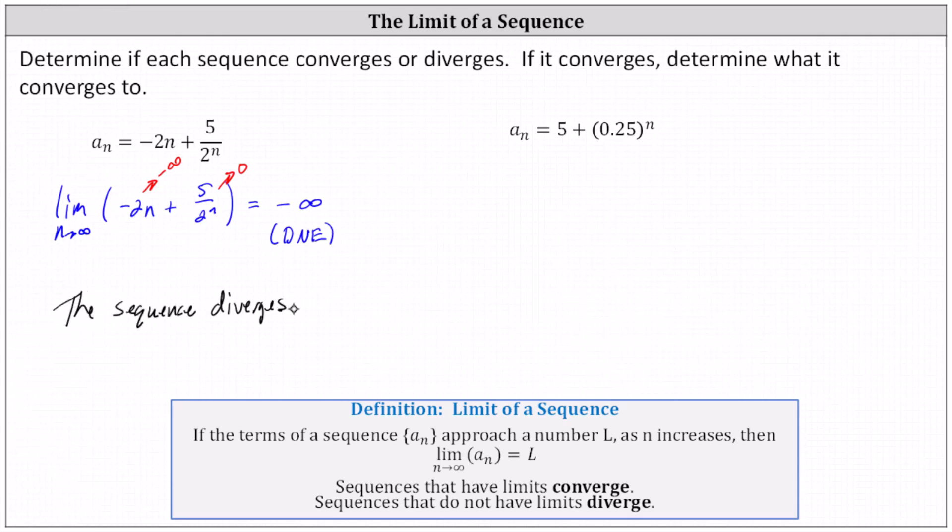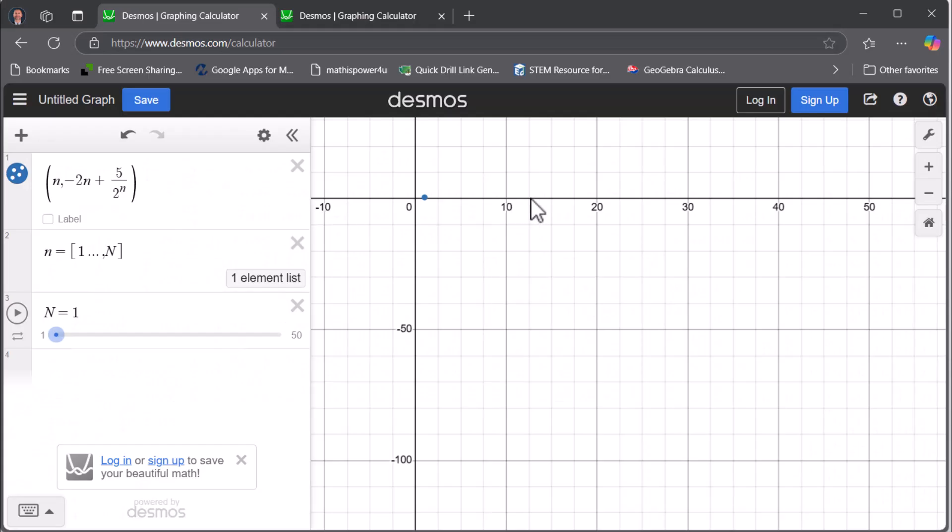Let's take a look at this graphically. I've already set this up in Desmos. We will plot points on the coordinate plane in the form of n comma a_n. Now we'll plot the first 50 points. The y value of each represent the terms in the sequence. Notice the y values decrease without bound and approach negative infinity, which is why the sequence diverges.